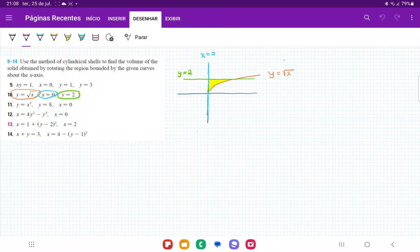So for number 10, we want to take the region bounded between these curves and we want to rotate it about the x-axis. So I've drawn these curves, and when we rotate it, we're taking this little height here, which is the distance between the y-axis and our curve, the square root of x, and then we're rotating it like so.